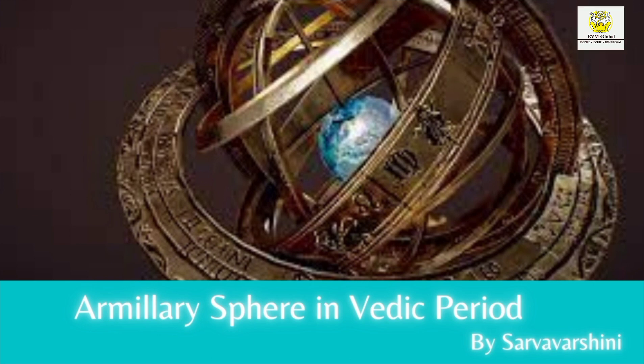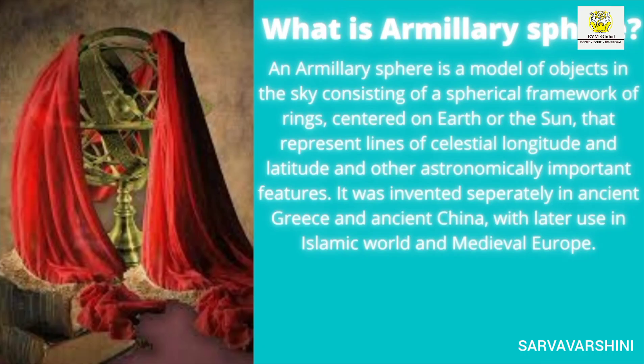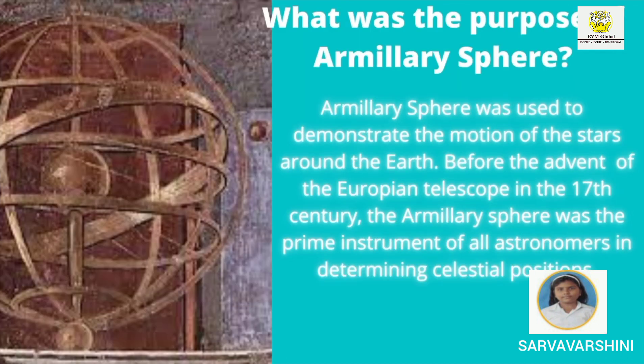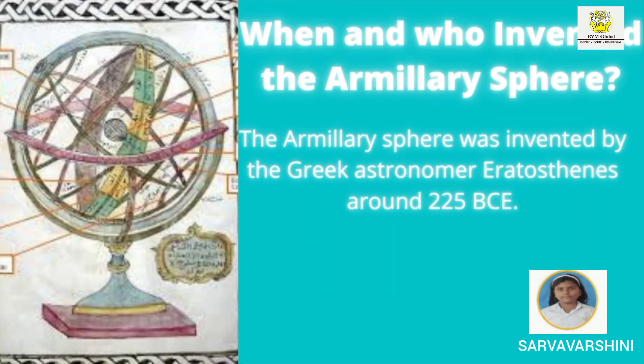Armillary Sphere in the Vedic Period: An armillary sphere is a model of objects in the sky consisting of a spherical framework of rings, centered on the Earth or the Sun, that represents lines of celestial longitude and latitude and other astronomically important features. The armillary sphere was used to demonstrate the motion of the stars around the Earth. It was invented by the Greek astronomer Eratosthenes around 225 BCE.